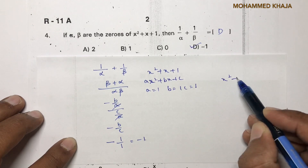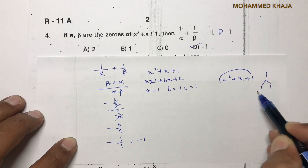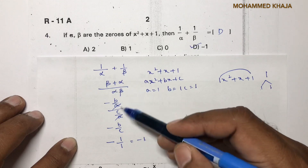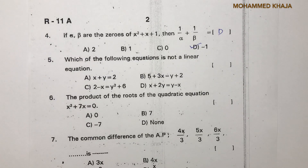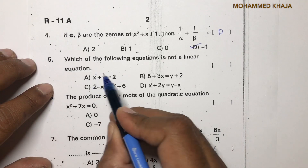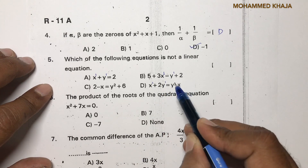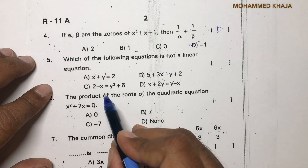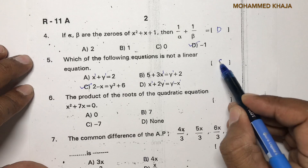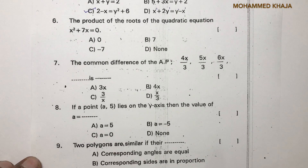Question 5: Which of the following is not a linear equation? Options A, B, and D are linear in two variables with degree 1. Option C has degree 2 and is quadratic, so it is not linear. Correct option is C.